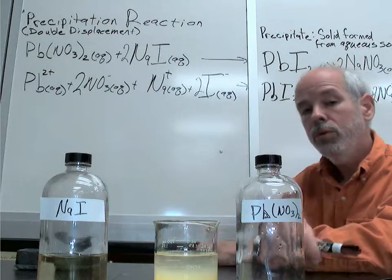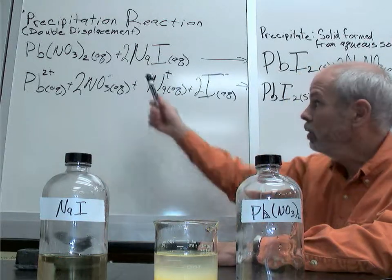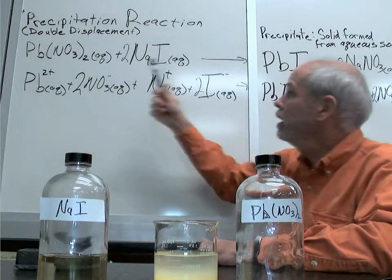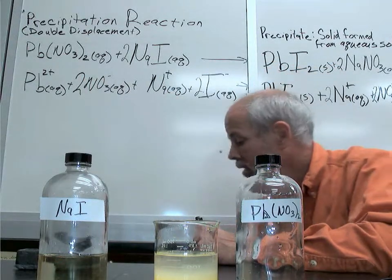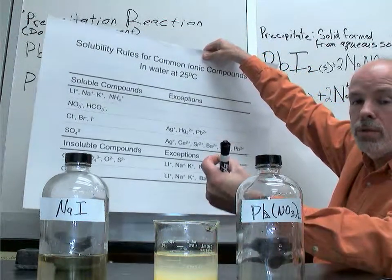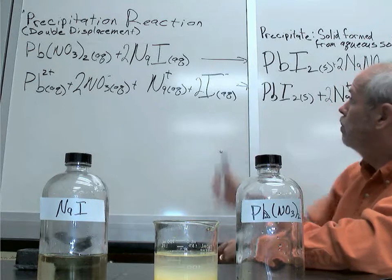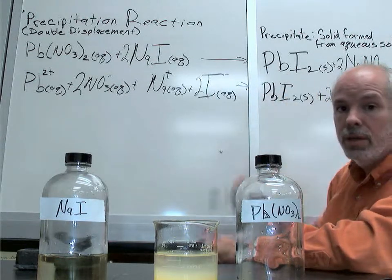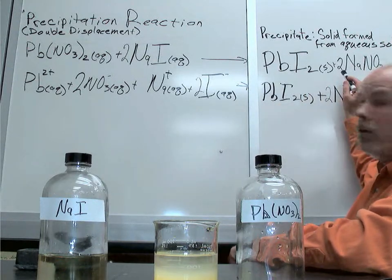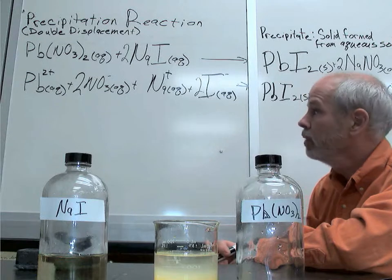So that's a precipitation reaction. What we do with precipitation reactions is we always mix together soluble ionic compounds, and then we trade the partners — that's what we mean by double displacement. We put lead with iodide, we put nitrate with sodium, and we look at our solubility rules in this table to figure out if the new partners, when you switch them, will be soluble or insoluble. It's a precipitation reaction if the partners are swapped and you get an insoluble ionic compound, and the other ions are always still aqueous.